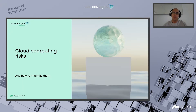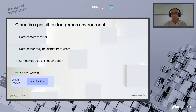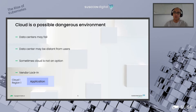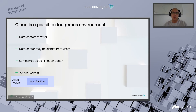Cloud computing risks and how to minimize them. Nowadays, we all know cloud is a reality. It is being used at a small scale, at a large scale, in dev environments, staging, production — you name it. Cloud benefits are well known, so it might come natural that you want to deploy your applications in the cloud. But using cloud also brings its own risks, and if the right strategy is not taken into account, it might even be considered a dangerous environment. When we think about cloud, regardless of what cloud provider you think about, we are talking about a physical location, most likely a data center.